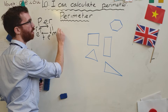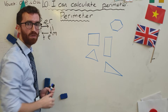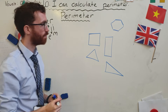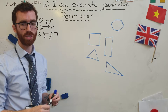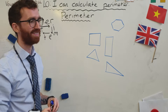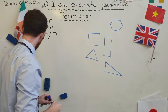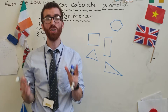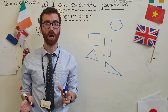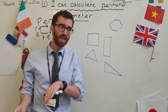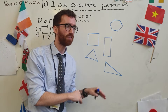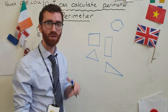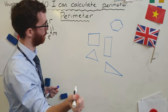So, perimeter — how do we do it? Well, one thing that you're probably going to need to make this easier is a ruler. I'm looking around for a ruler and I can't even see one right now — you might not have one. But don't worry, it's not going to be pointless if you don't have a ruler at home, because there are easy ways to get around it — you just make it up.